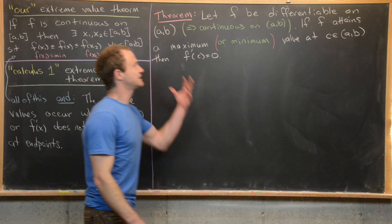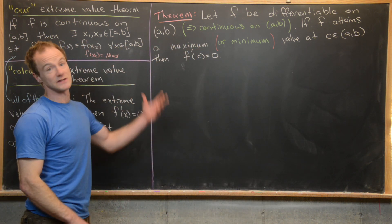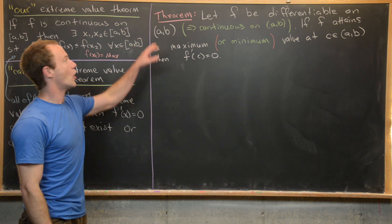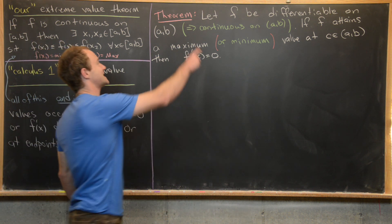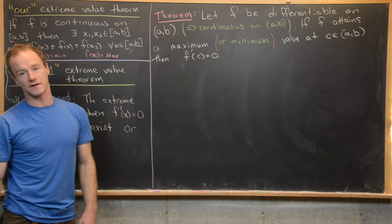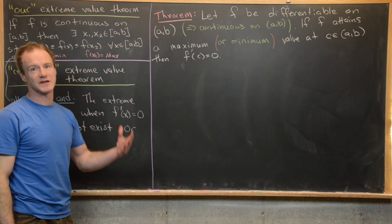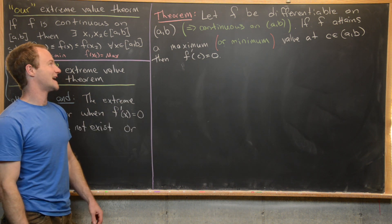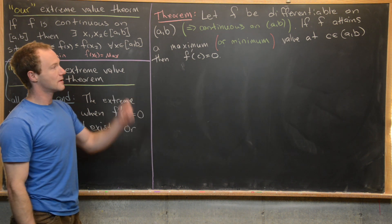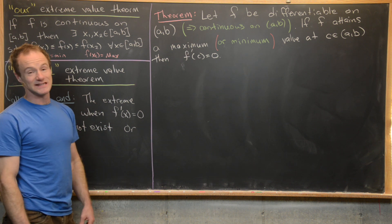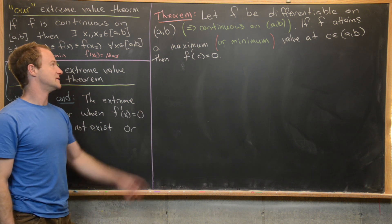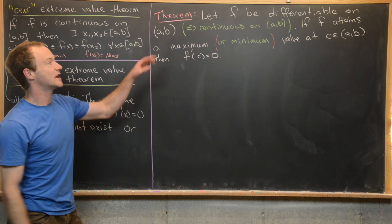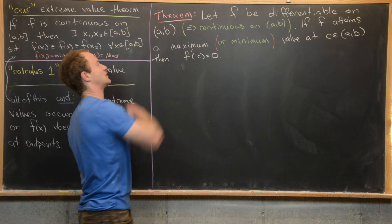I want to prove a theorem today using the careful definition of differentiability and the notion of the derivative, so that we can link these two theorems together. In particular, the theorem goes like this: let f be differentiable on the open interval (a, b) — which implies it's continuous on (a, b) by something we proved earlier. Then if f attains a maximum or minimum at c in (a, b), then f'(c) = 0.